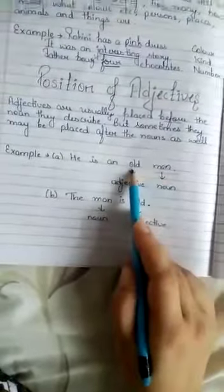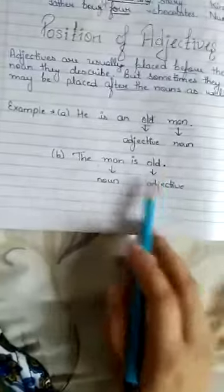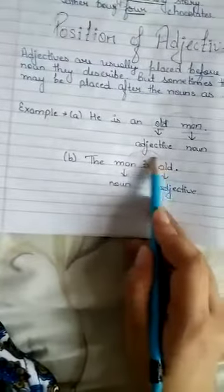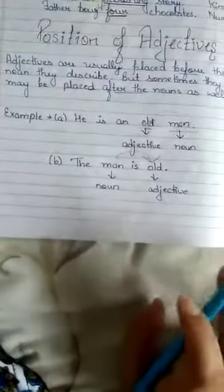Now next is 'The man is old.' Man is a noun. The adjective is what? Old. So it is placed after the noun also. Clear?